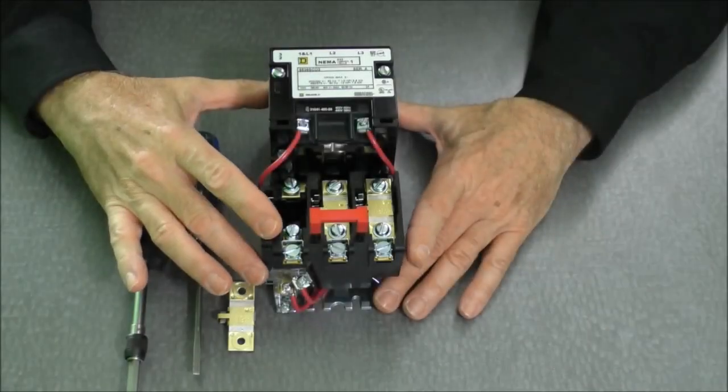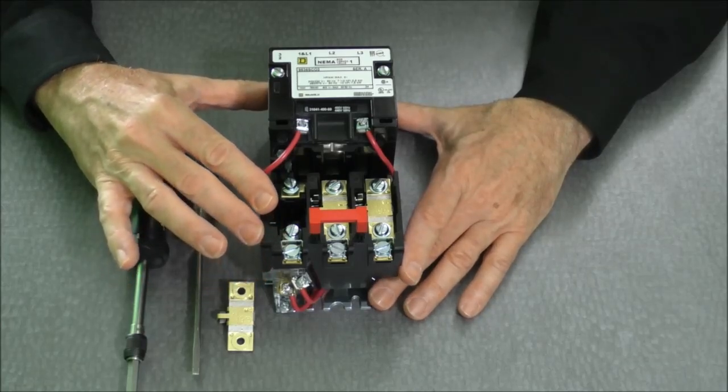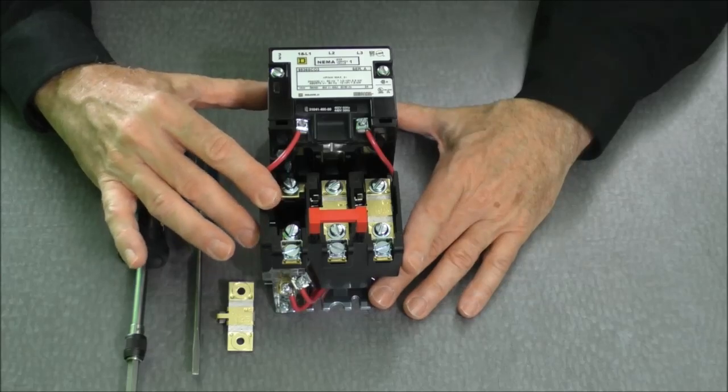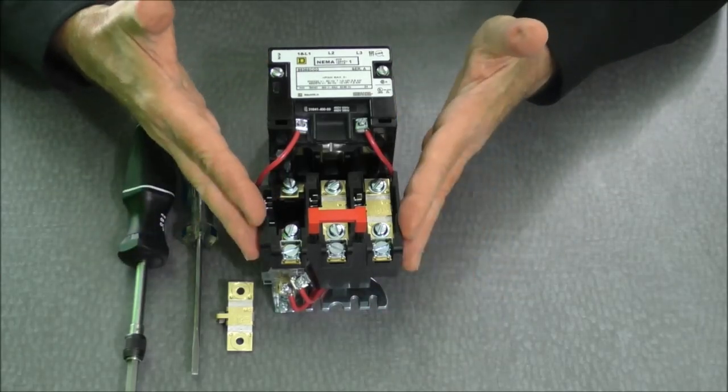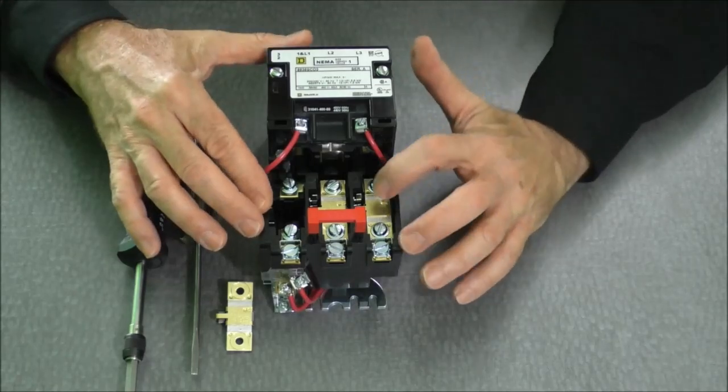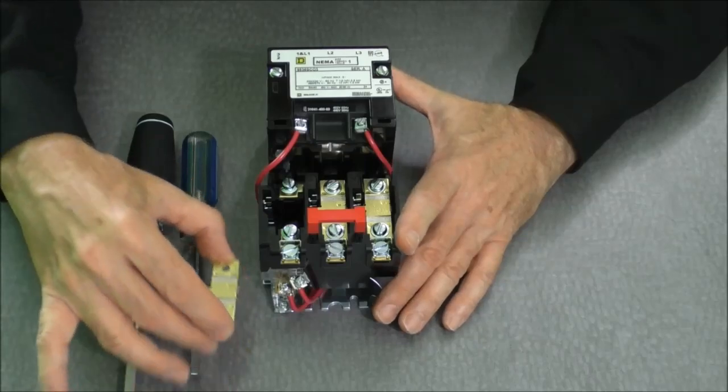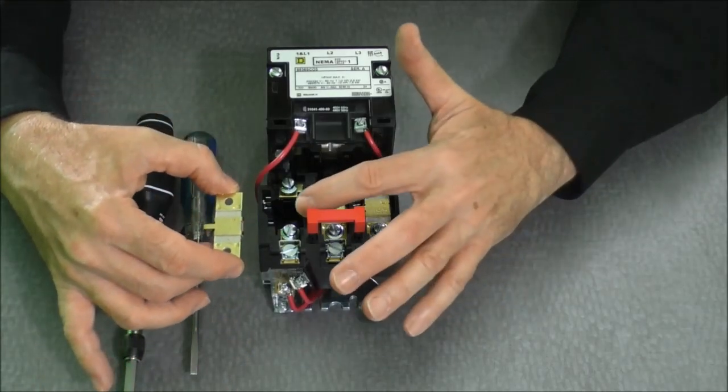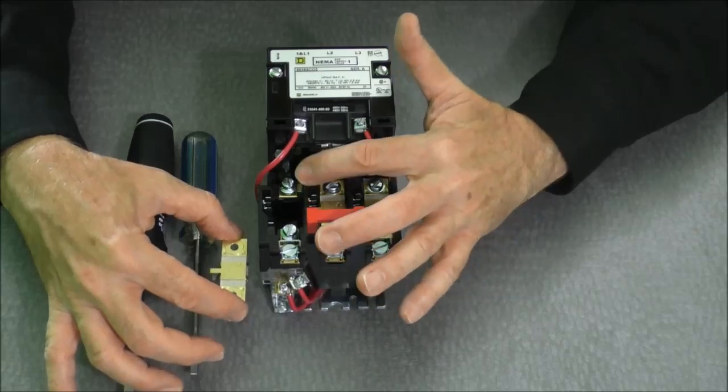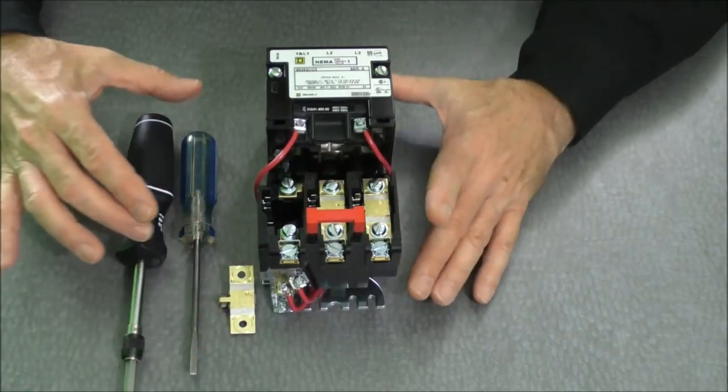I have before me a Square D Type S NEMA size 1 melting alloy starter. What makes it a melting alloy starter is the overload relay block. This particular overload relay block currently has two thermal elements installed. This is what a thermal element will look like before installation, and the third cavity will have the two screws to fix the thermal element in the overload relay block.